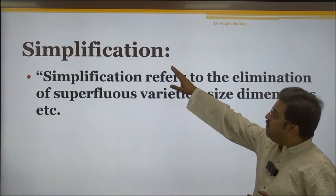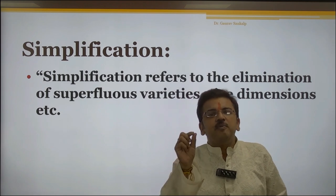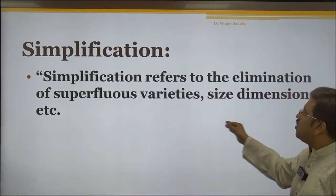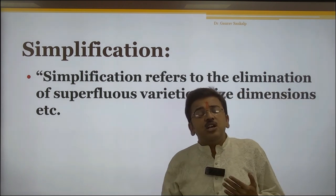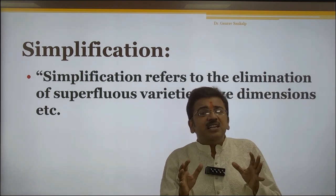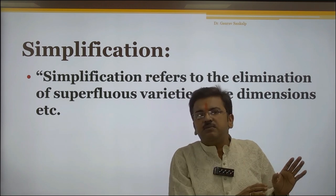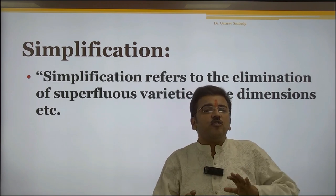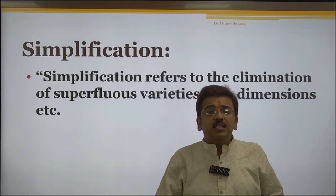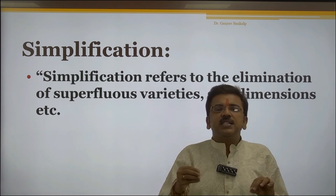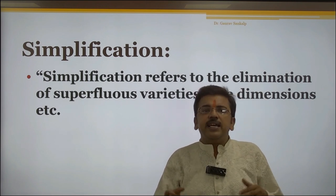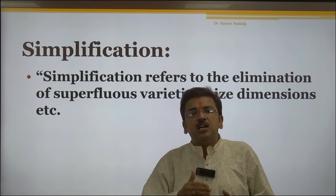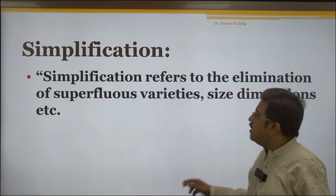Next is simplification. The word itself says you have to make a product which is very simple to be used by the customer. Simplification refers to the elimination of superfluous varieties, sizes, dimensions, etc. Whenever you make a product that is very easy to use, you have created a simplified system for the customer. For example, there are many automatic cars in the market which allow customers to operate the car without a gear system, simplifying the process of driving. The more you simplify the process, the more actively the customer buys the product.